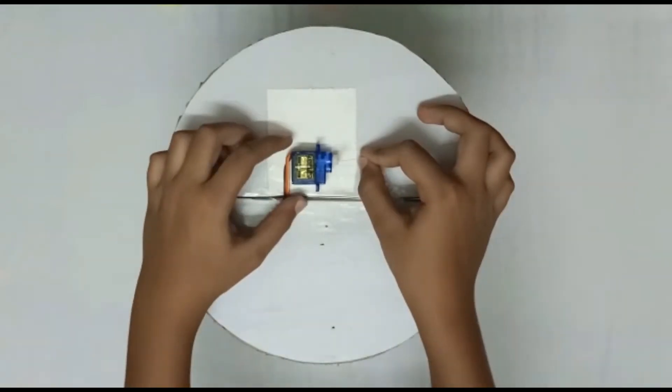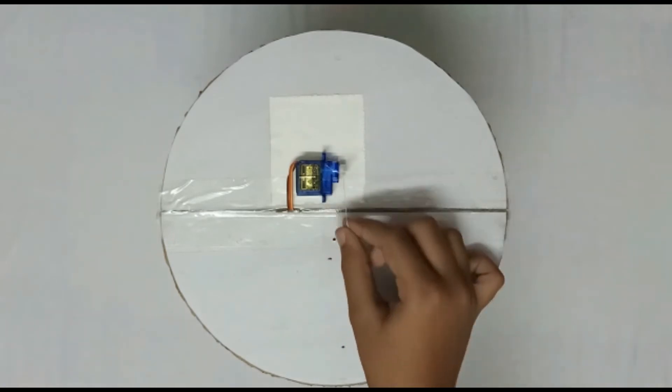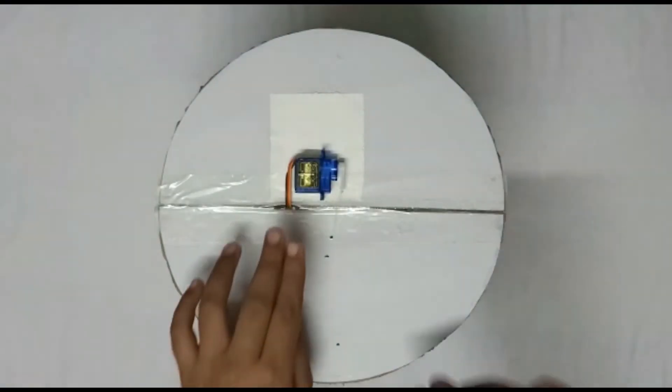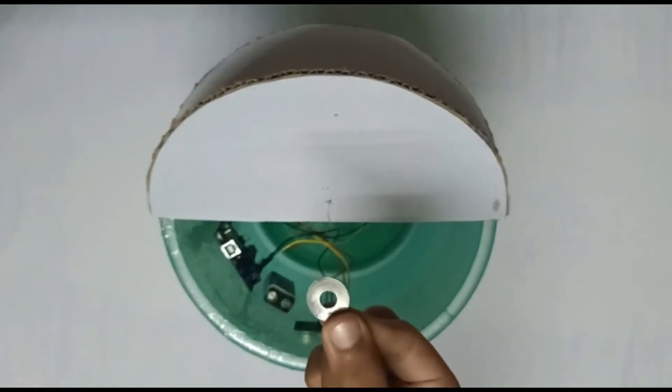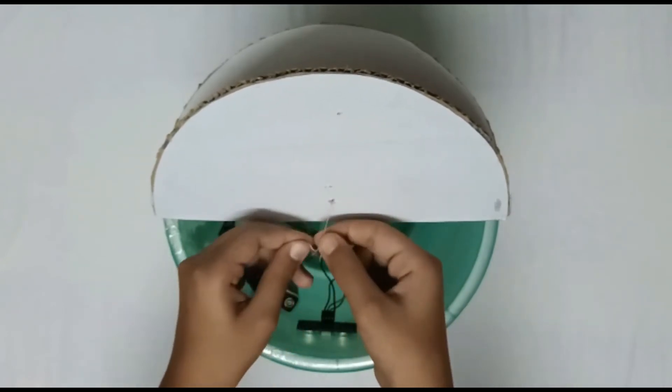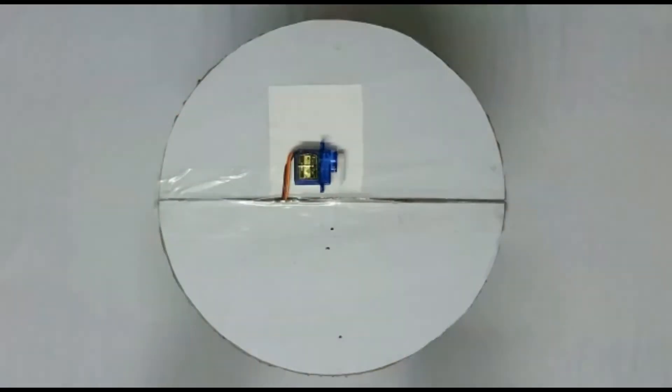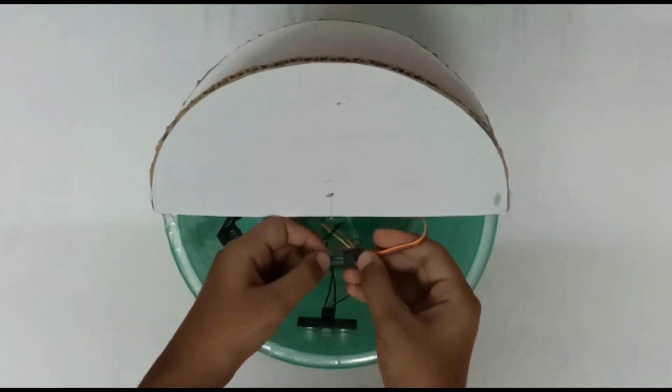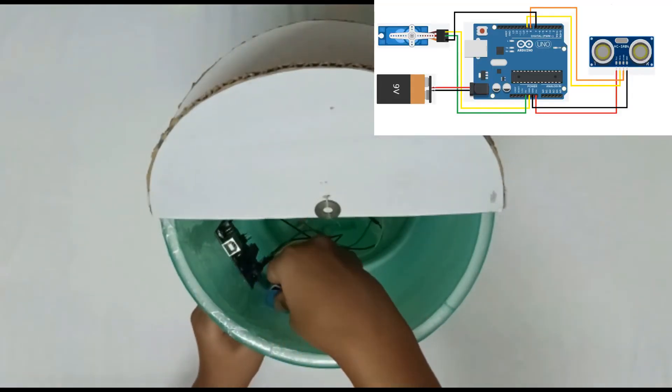Take a thread and put it into the hole of the servo motor and tie it gently. Now pass the thread through this hole. Adjust the nut with the string. Fix the lever and tighten the string as required. Now reconnect the wires of the servo motor as shown in the circuit diagram. Take the battery connector and connect it to the battery and the Arduino.